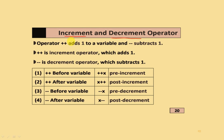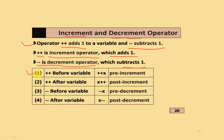The increment and decrement operators are very useful in Java programming. The ++ operator adds 1 to a variable, and the -- operator subtracts 1. ++x is the pre-increment (before the variable) and x++ is the post-increment (after the variable). Similarly, --x is the pre-decrement and x-- is the post-decrement.